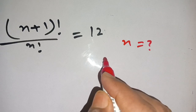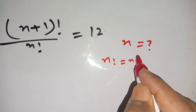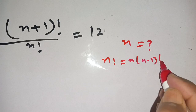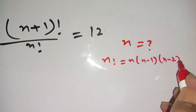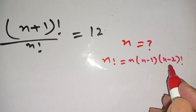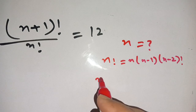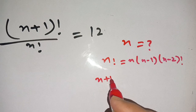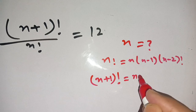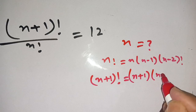n factorial is equal to n times (n−1) times (n−2) factorial, and we extend it up to our required terms. And (n+1)! is equal to (n+1) times n times...